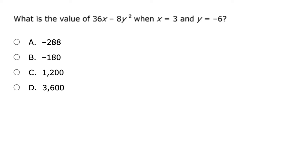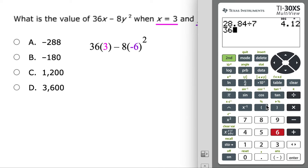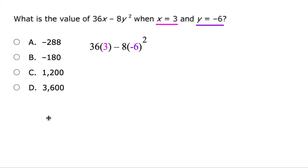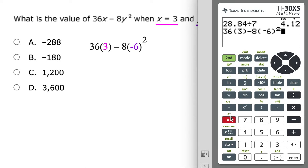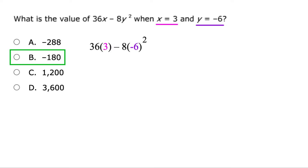The next one is a substitution — we're just going to change these letters to these numbers. We're going to replace x with 3 and y with negative 6. When you replace letters with numbers, it always works if you put them in parentheses. We'll type this into the calculator: 36 times (3), then minus 8 times (negative 6). When you use negative, it's that white button. Notice this one is squared, so use the x-squared button. The answer is negative 180.